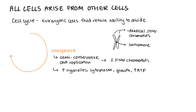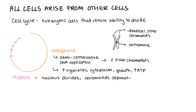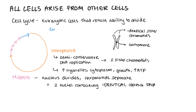Now that we've prepared, we're going to have mitosis, which is a division of the nucleus, where the sister chromatids separate. This is going to form two nuclei containing identical copies of DNA. This is not the division of the cytoplasm — it is the division of the nucleus. A third stage happens after this, which is called cytokinesis: the division of the cytoplasm to form two cells, and it doesn't always happen.